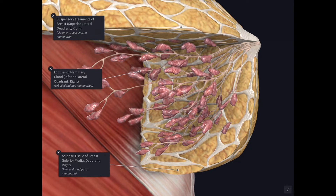The glandular tissue consists of 15 to 20 pyramidal lobes, each being drained by the lactiferous duct. The part of the mammary gland drained by one lactiferous duct is called the lobe of the gland. The lobes are arranged in a radiating manner and they converge towards the areola, where the lactiferous duct dilates to form the lactiferous sinus, which possibly acts as a reservoir of milk. Finally, the duct opens into the nipple.